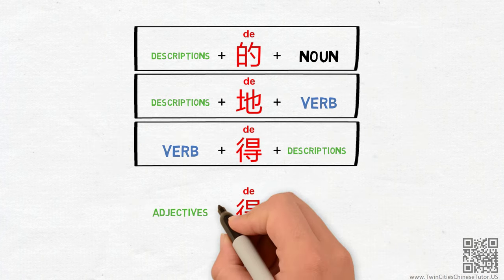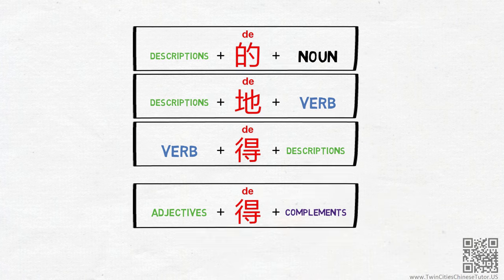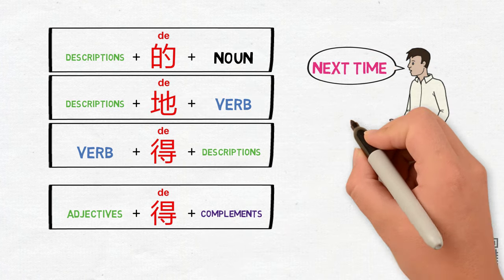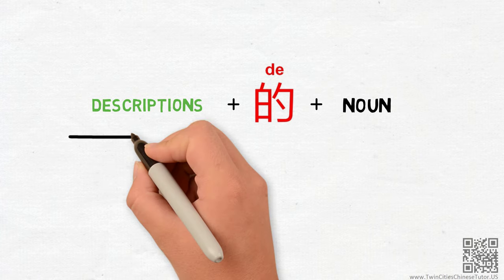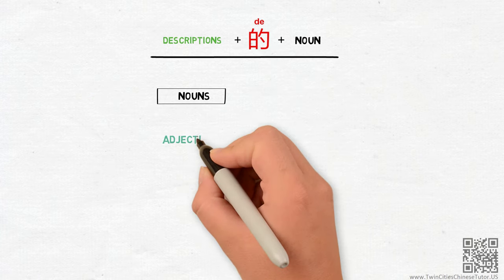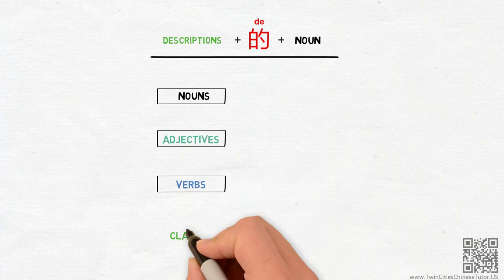The third DE can also connect adjectives with complements, but we will discuss that in another video. With the first DE, the description here can be nouns, adjectives, verbs, or even clauses.